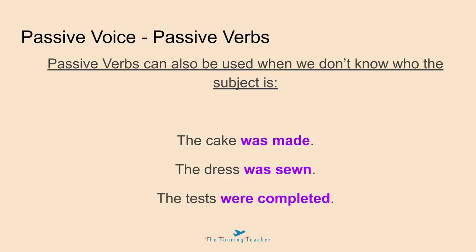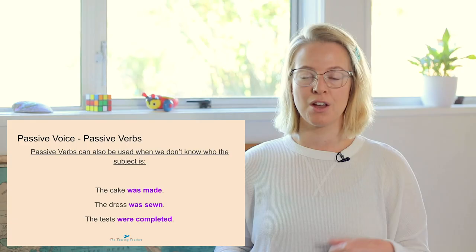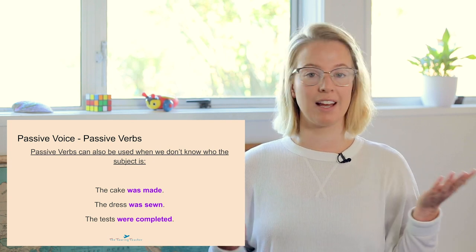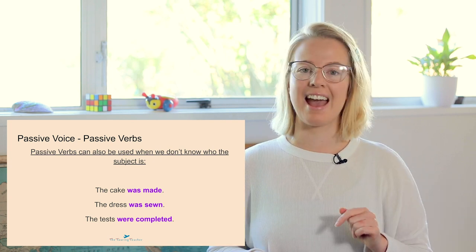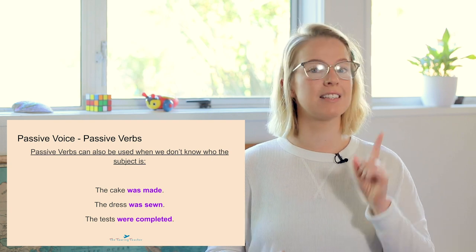Now we're going to look at passive verbs. Passive verbs are what's used in passive voice sentences, and they can be used when there is no subject in the sentence — but it still gives us an idea of what's happening. For example: the cake was made; the dress was sewn; the tests were completed. You can see the three passive verbs, and there's no subject, but the sentence still makes sense.